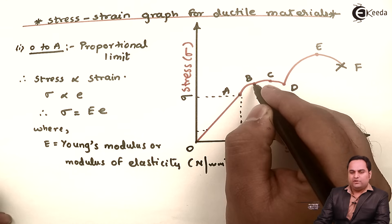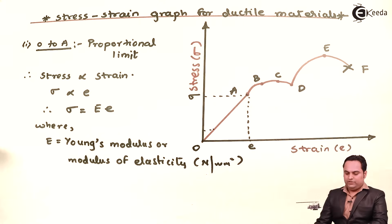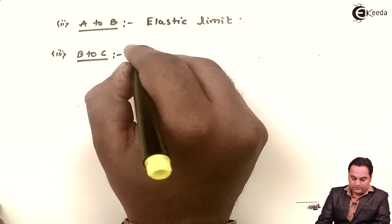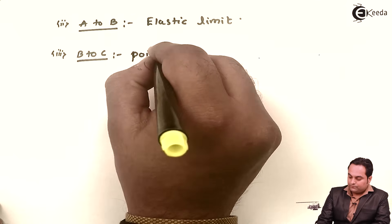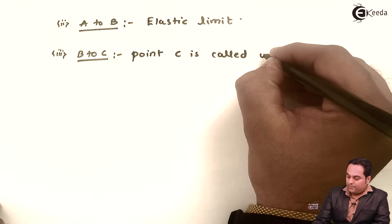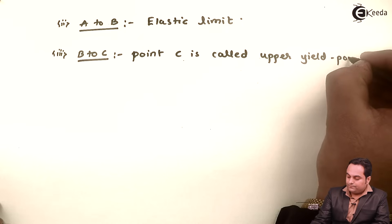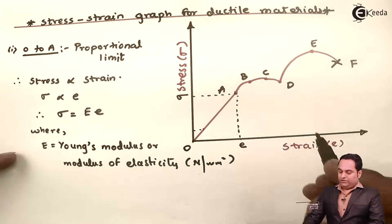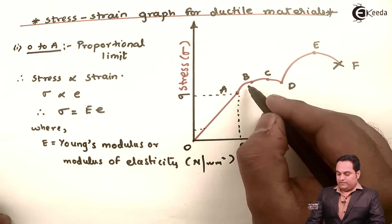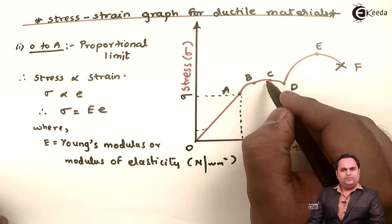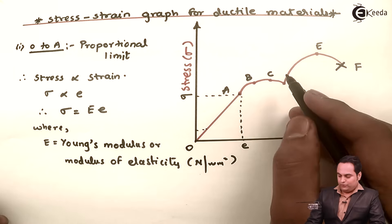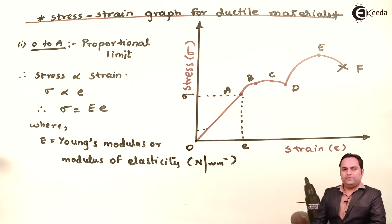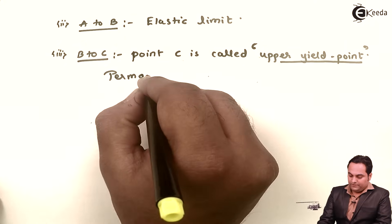From B to C, the change in stress is not very much — there is very little difference between B and C. Point C is called the upper yield point, meaning yielding has started. Yielding means a change in shape. Once the material crosses point B and reaches the B to C region, it will be permanently deformed. If we remove the load from point C, the material will not regain its original shape. This B to C region is also called permanent set.